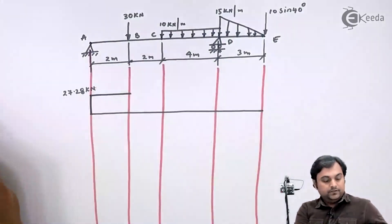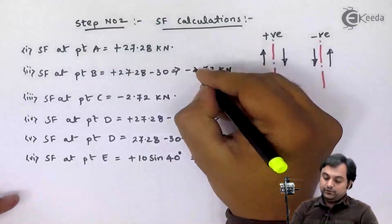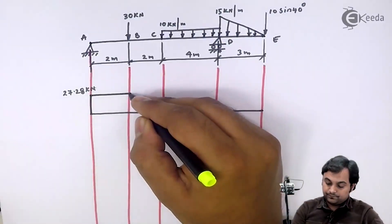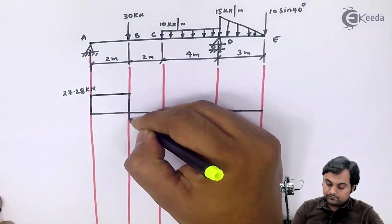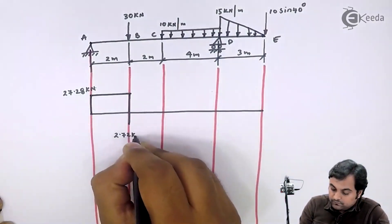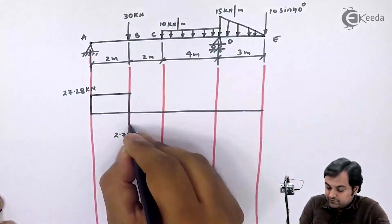Now at B the value of shear force is minus 2.72 kilonewton. So downward between B to C there is no load. So again shear force will remain constant.